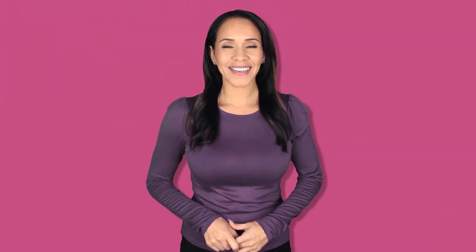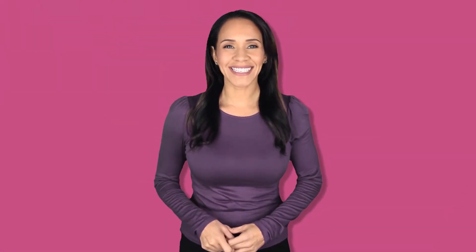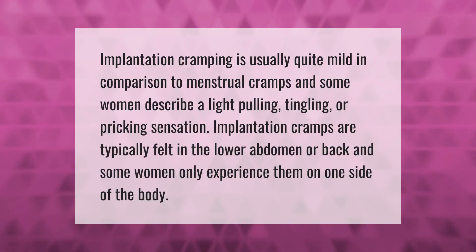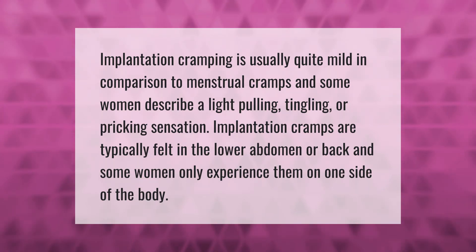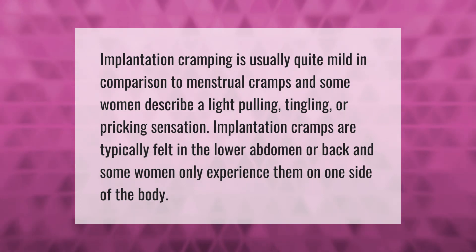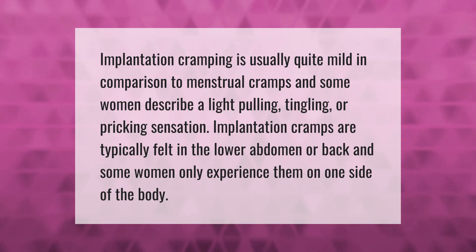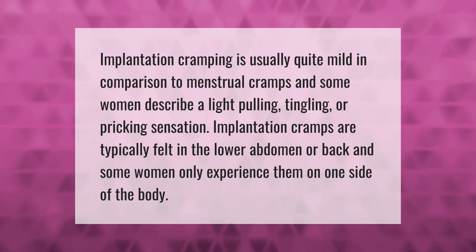Implantation cramping is usually quite mild in comparison to menstrual cramps, and some women describe a light pulling, tingling, or pricking sensation. Implantation cramps are typically felt in the lower abdomen or back, and some women only experience them on one side of the body.